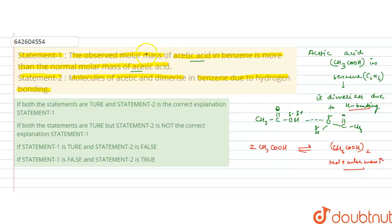So this statement, that observed molar mass of acetic acid in benzene is more than the normal molar mass of acetic acid, this one is correct. And the reason given in statement 2 - molecules of acetic acid dimerize in benzene due to hydrogen bonding - this is also correct.